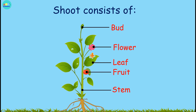The shoot consists of buds, flower, leaf, fruit, and stem.